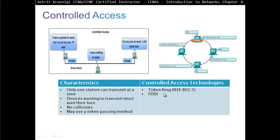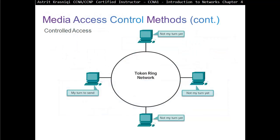For example, here we have FDDI or Token Ring, where a token goes around the network and you can only send if you are possessing the token. If you don't have the token, you can't send any data. For example, say device D is sending something to device A. The token goes to C — C looks at it, it's not for C, so it moves the token forward. It goes to B — B looks at it, even if B has data to send it can't, because the token is full and it's not for B, so B moves it forward. Then it goes to A, which sees it's for that PC and removes whatever is in the token. Controlled access: devices can send only if they possess a token.